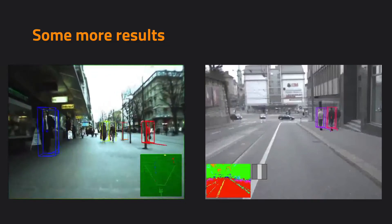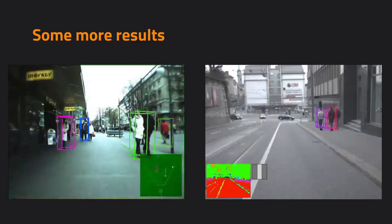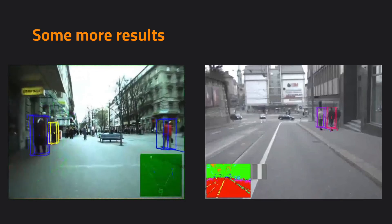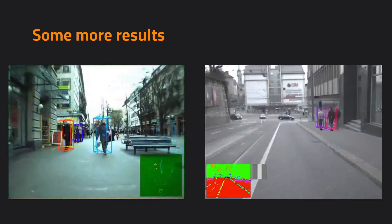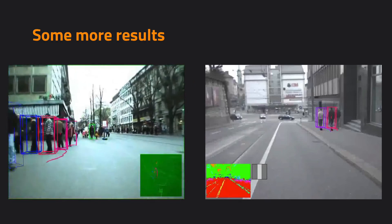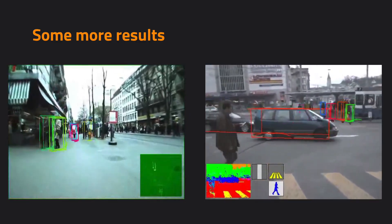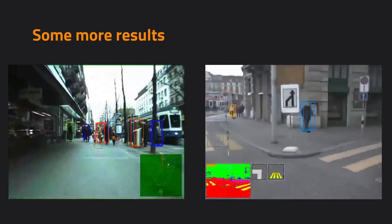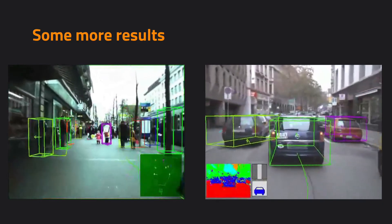Here are some more examples. For each tracked object, we can also analyze some additional properties within the bounding box. For example, we can see the orientation of the walking directions. This analysis of vehicle and pedestrian trajectories is more useful for autonomous driving systems.